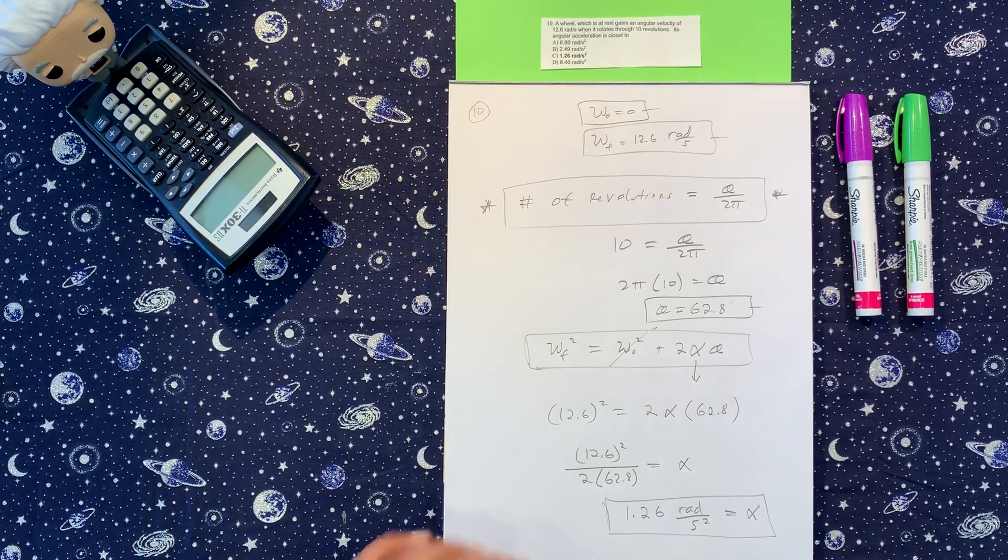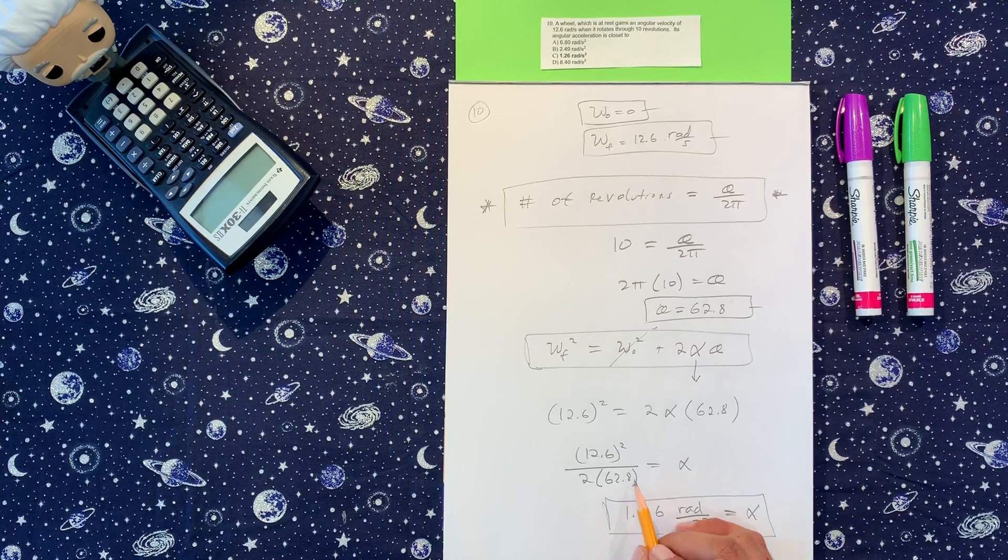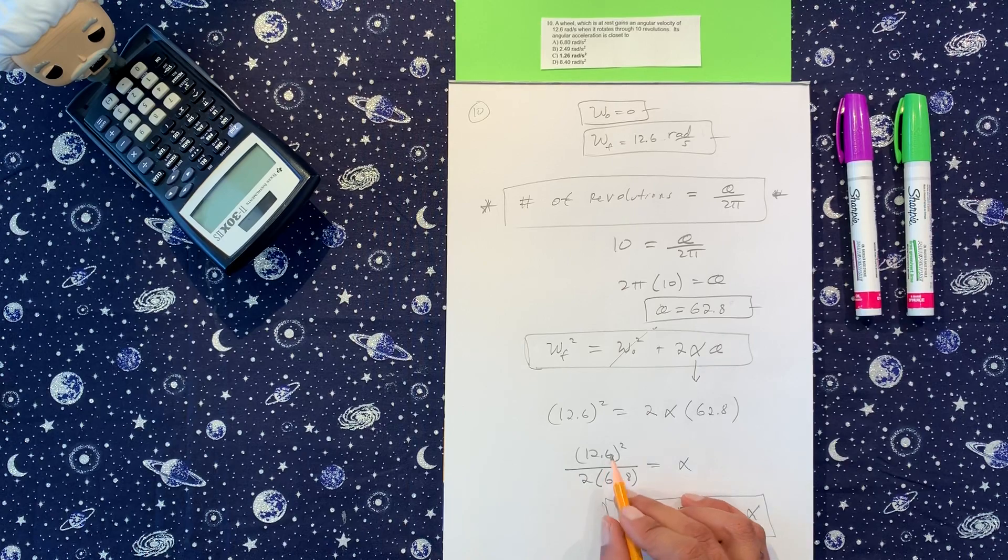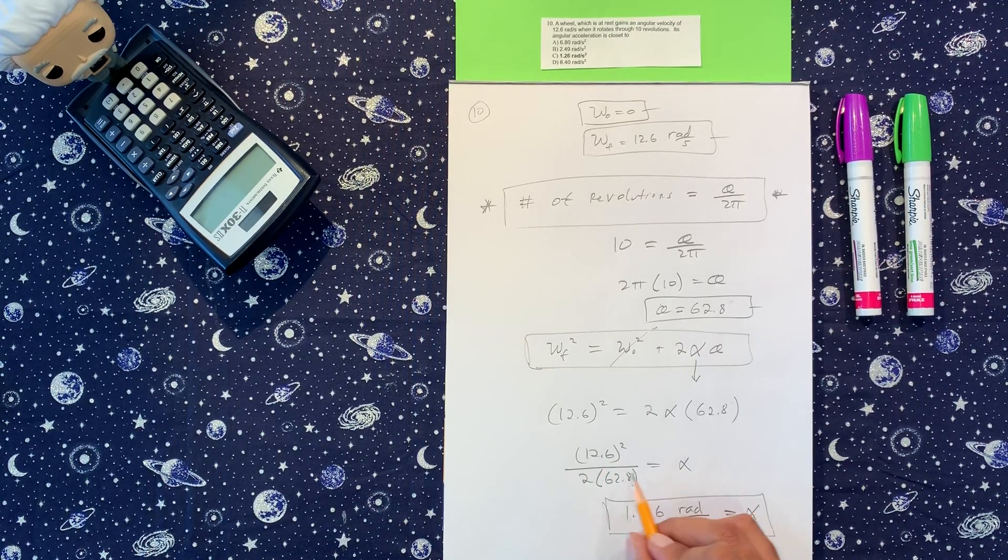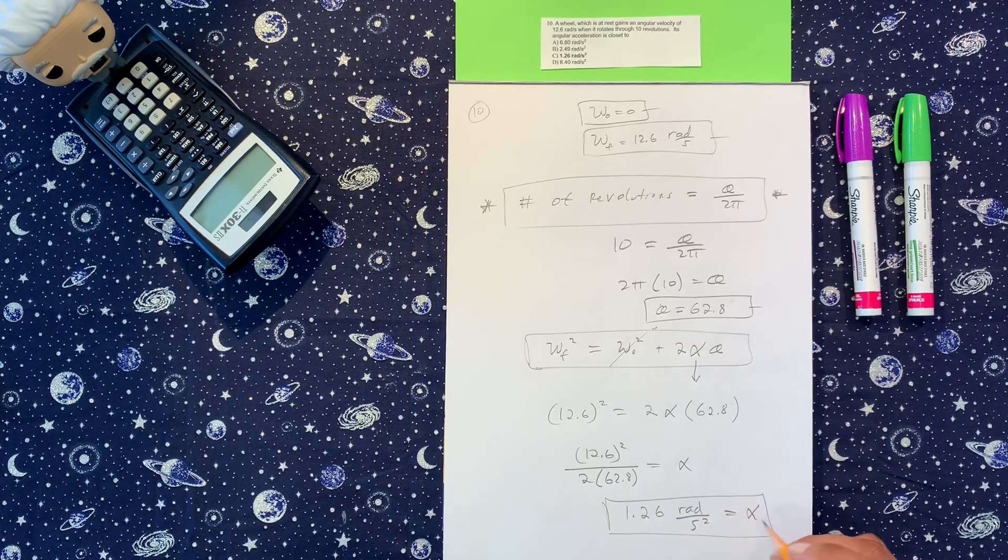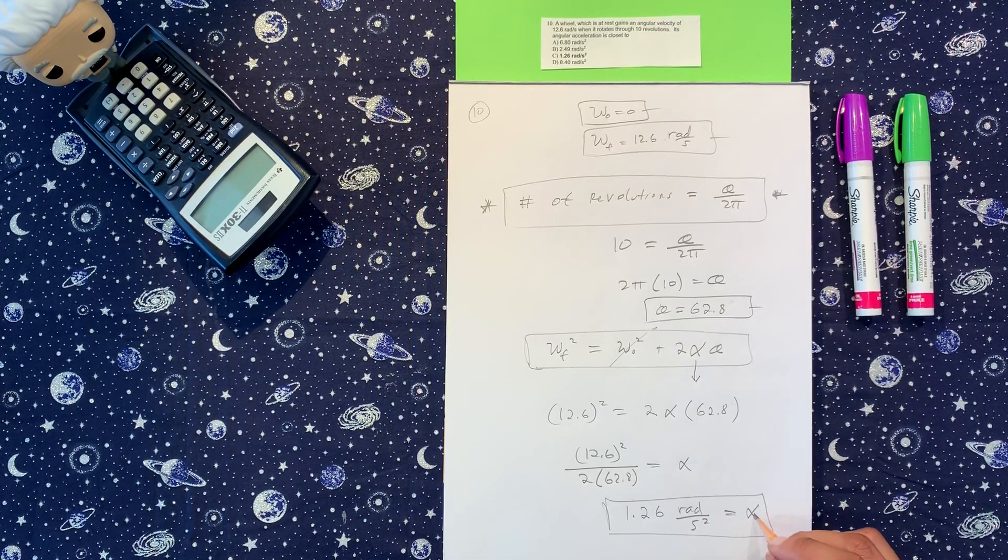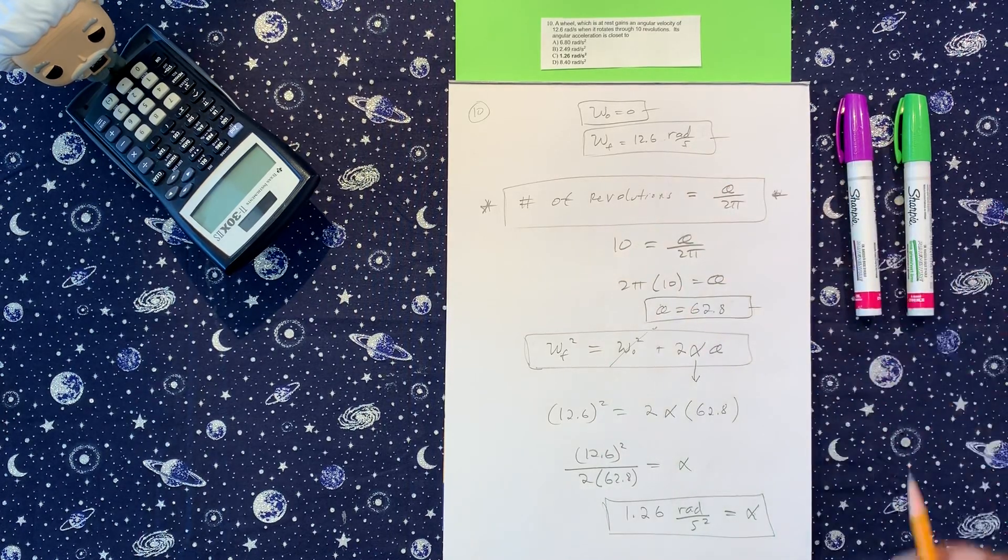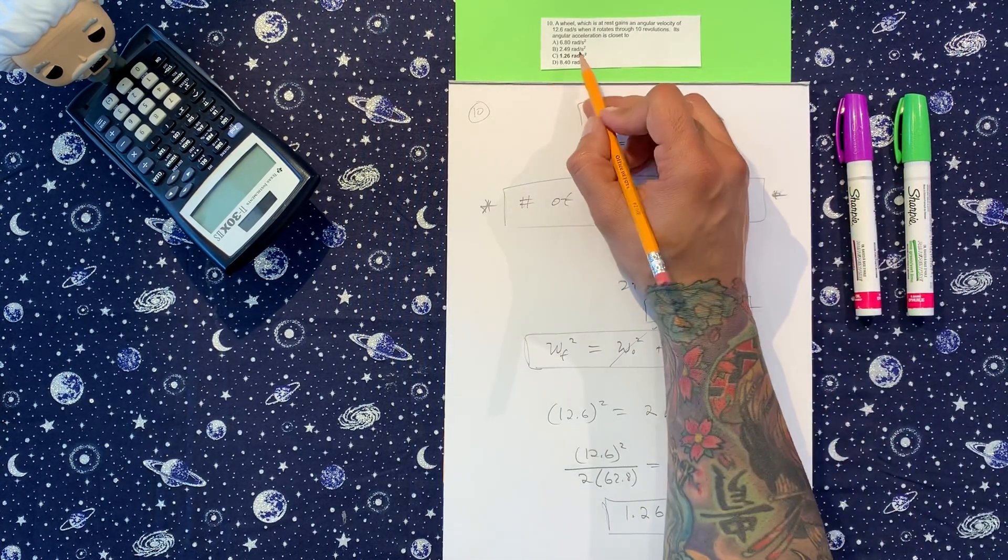So this is unitless here because the rads per second comes from this part here, but it might be rad, so cancels one of those. Either way we have rads per second squared. This is squared because this one's an acceleration. The velocity one will say just seconds on the bottom. So 1.26, we got C.